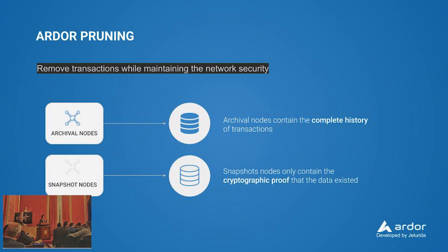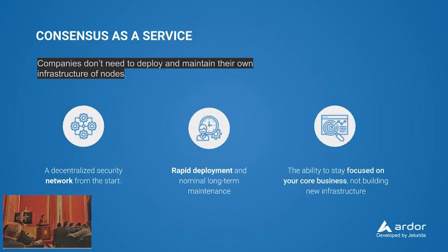The third benefit is the following: because the parent chain is performing the consensus algorithm, companies don't need to create their own decentralized infrastructure. An Ardor child chain offers a decentralized network from day one, and this allows companies to focus on their core business and make a rapid deployment of their products.